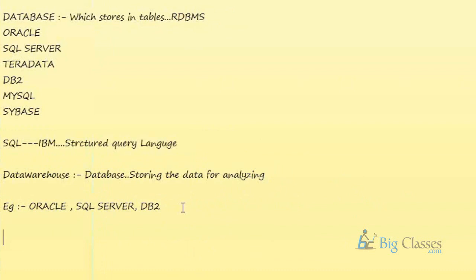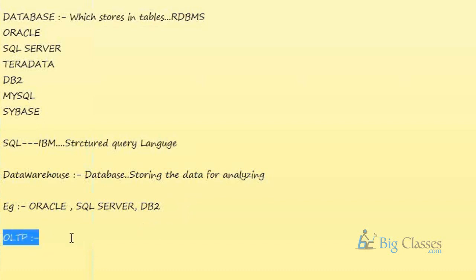Before understanding the ETL process, we need to know two types of applications: one is called a transaction-oriented application (OLTP) and another is called an analytical-oriented application (OLAP). OLTP stands for Online Transaction Processing System. These systems are called OLTP because frequent transactions happen on them.